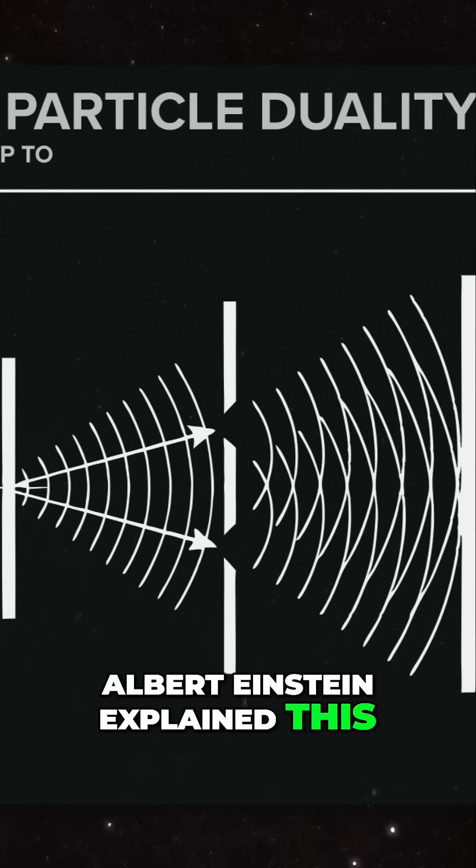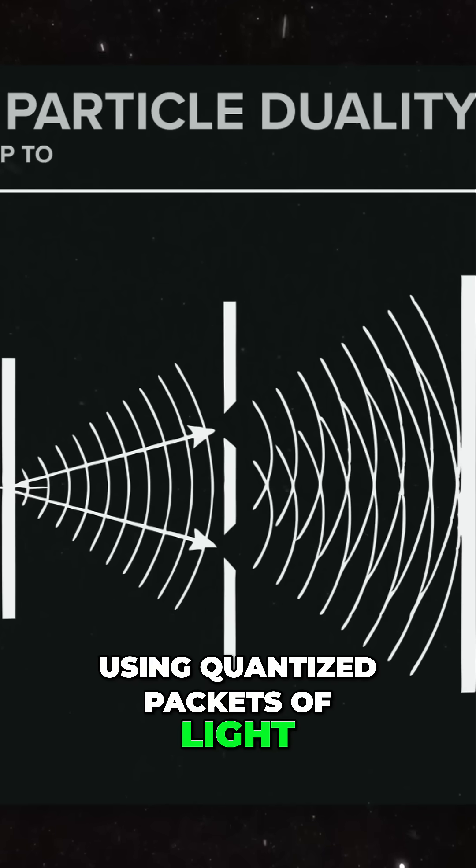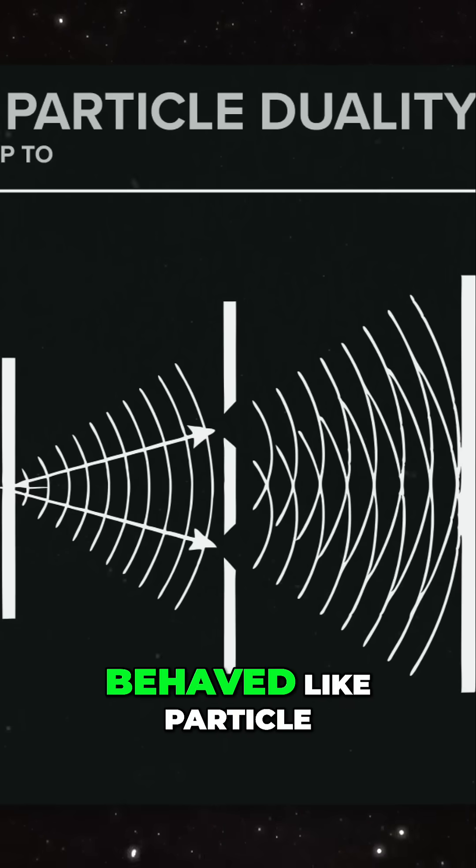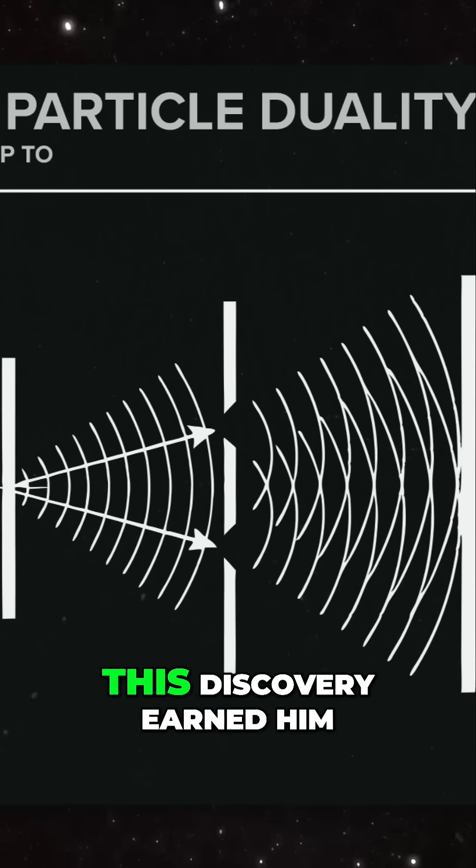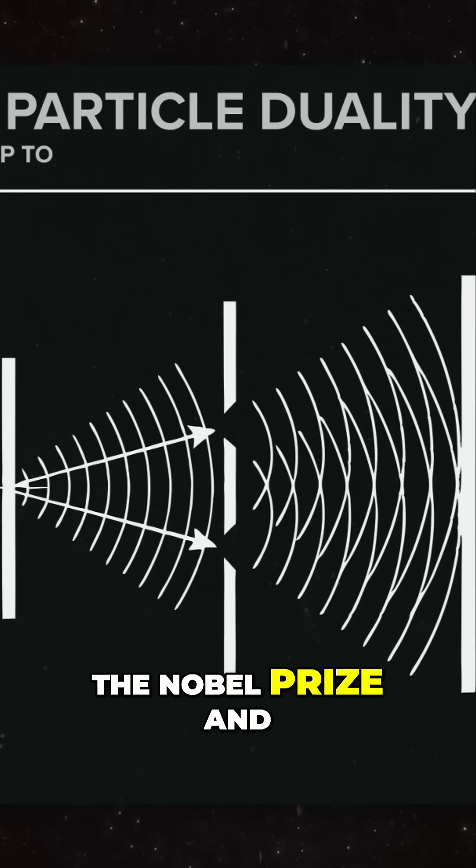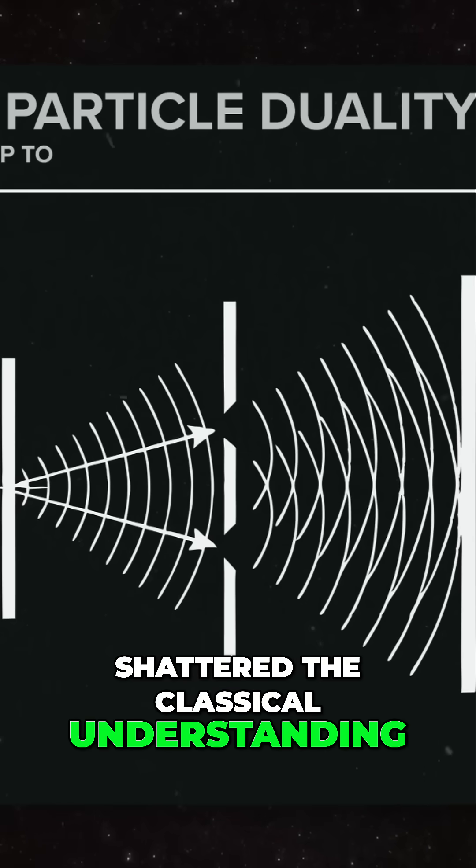Albert Einstein explained this using quantized packets of light, or photons, showing that light also behaved like a particle. This discovery earned him the Nobel Prize and shattered the classical understanding of physics.